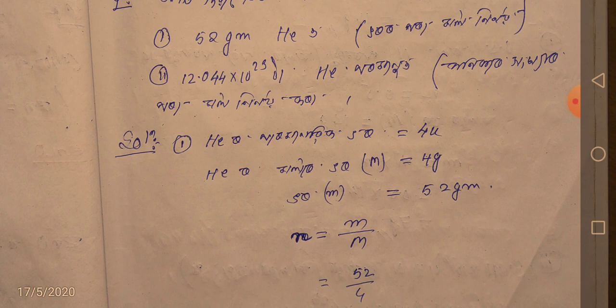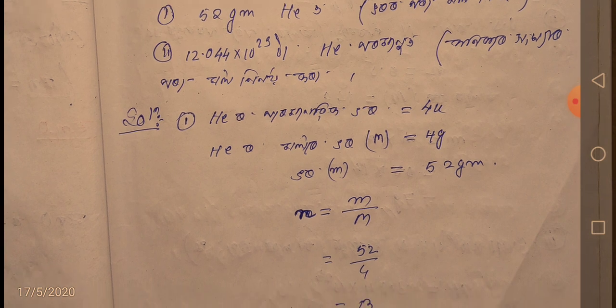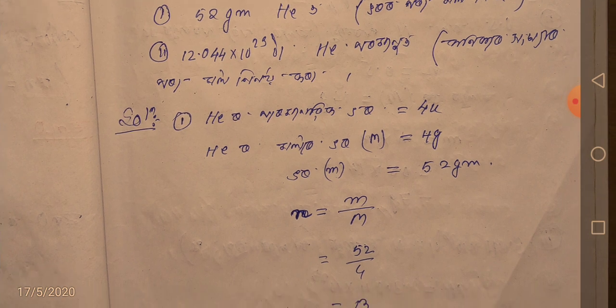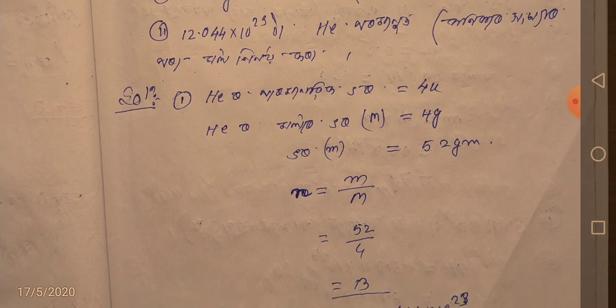M is equal to 52 grams. If I write small m, I will write n equal to m by M, and I will write that number. The molar mass is capital M, and the question gives small m.